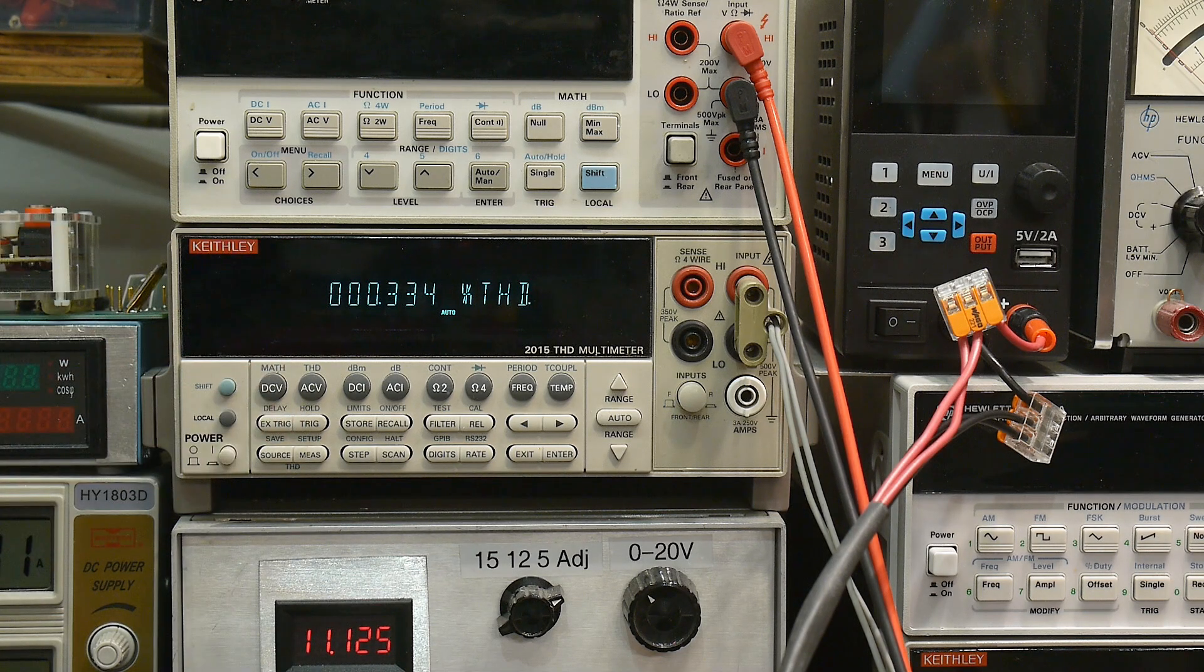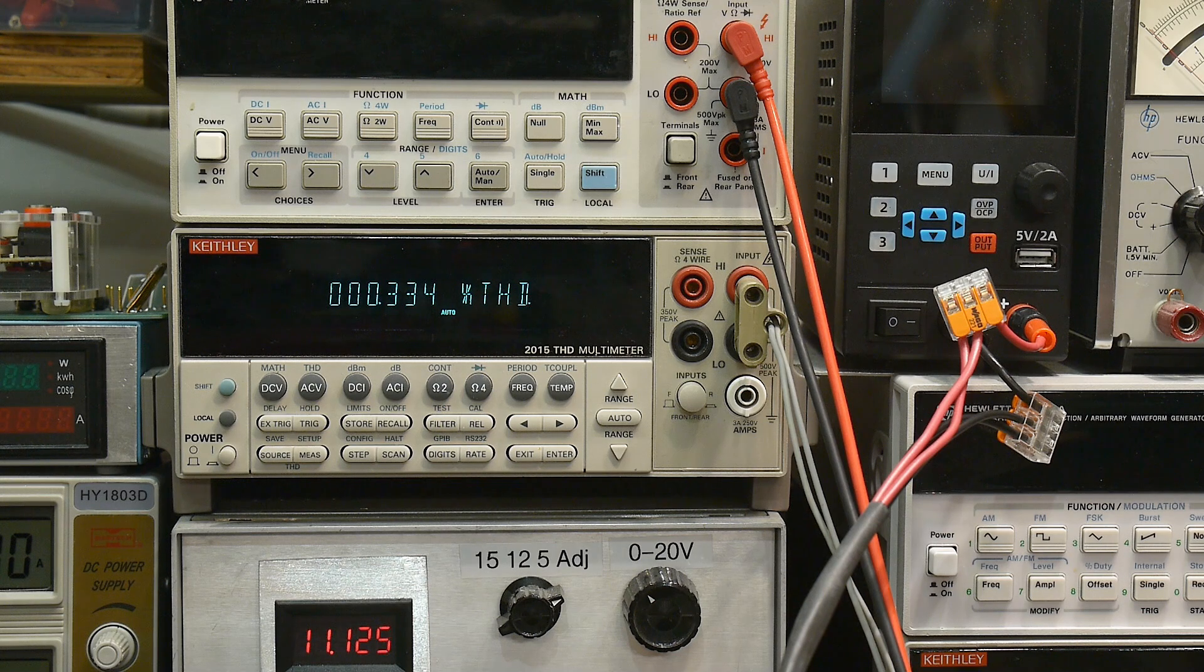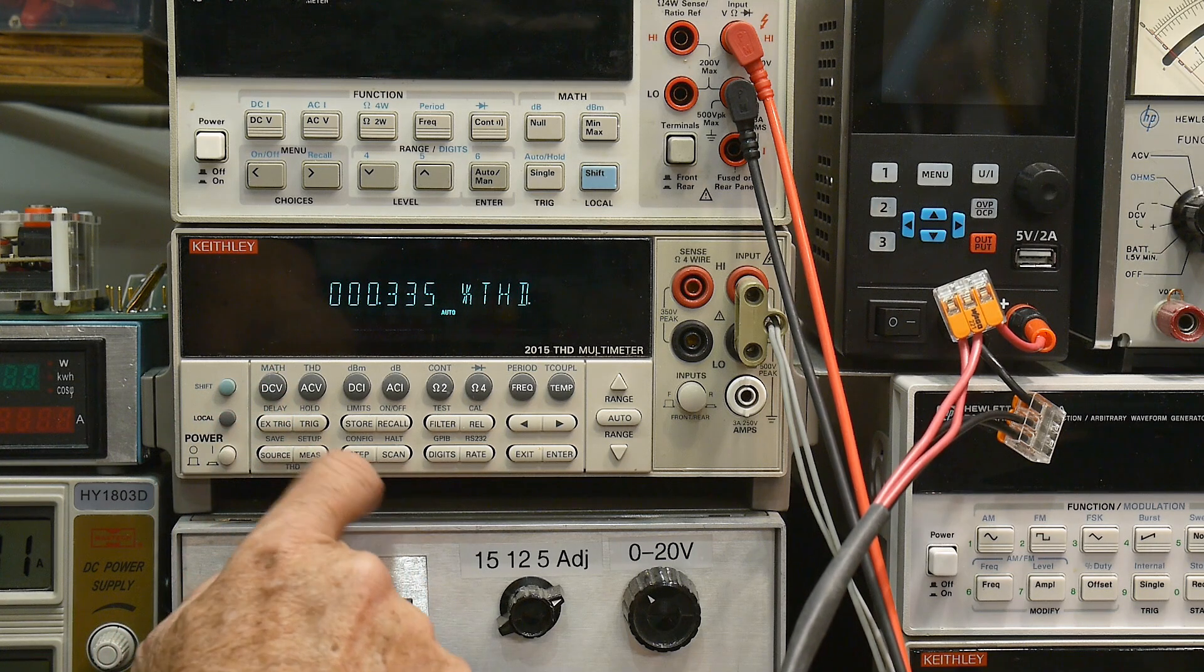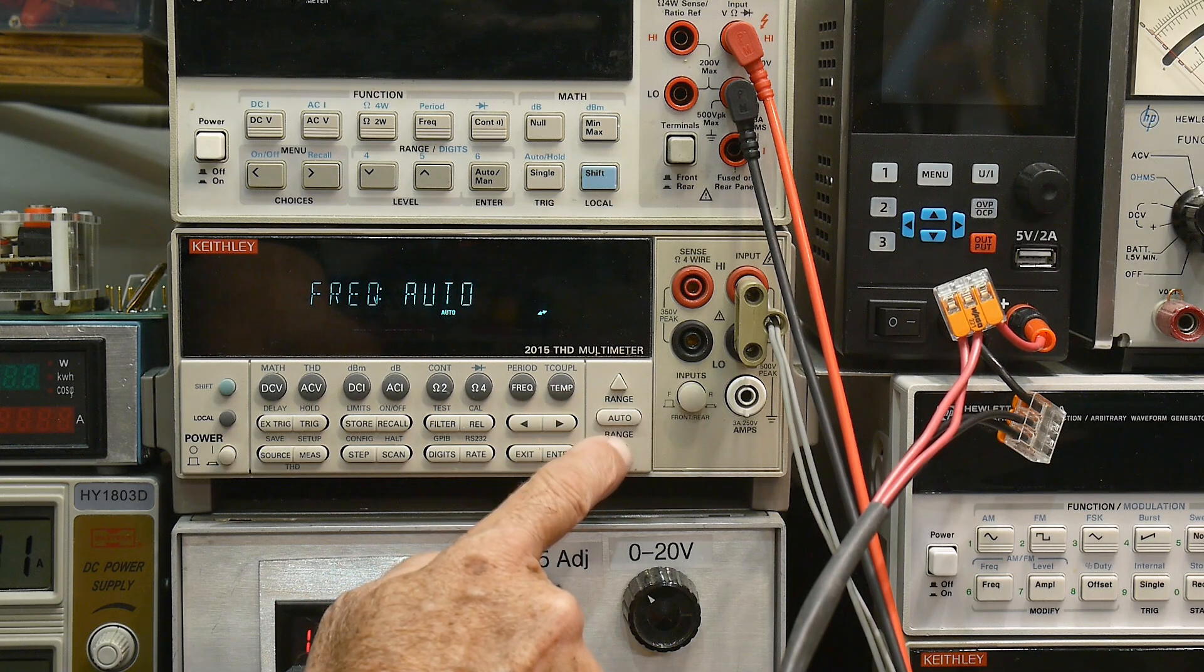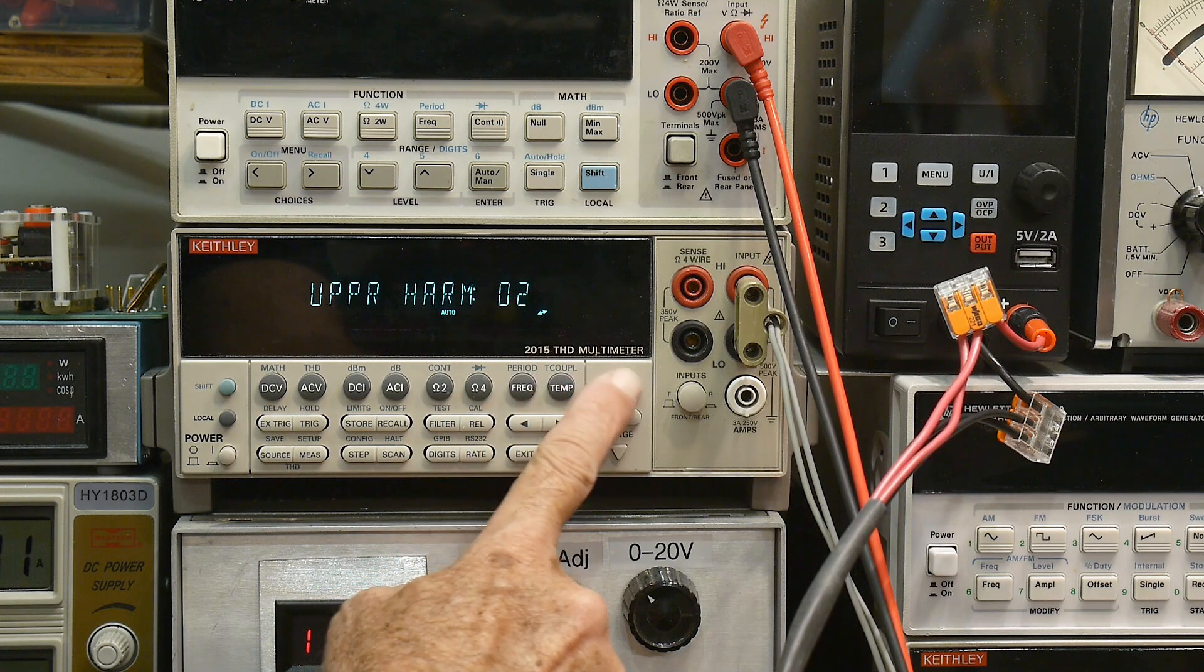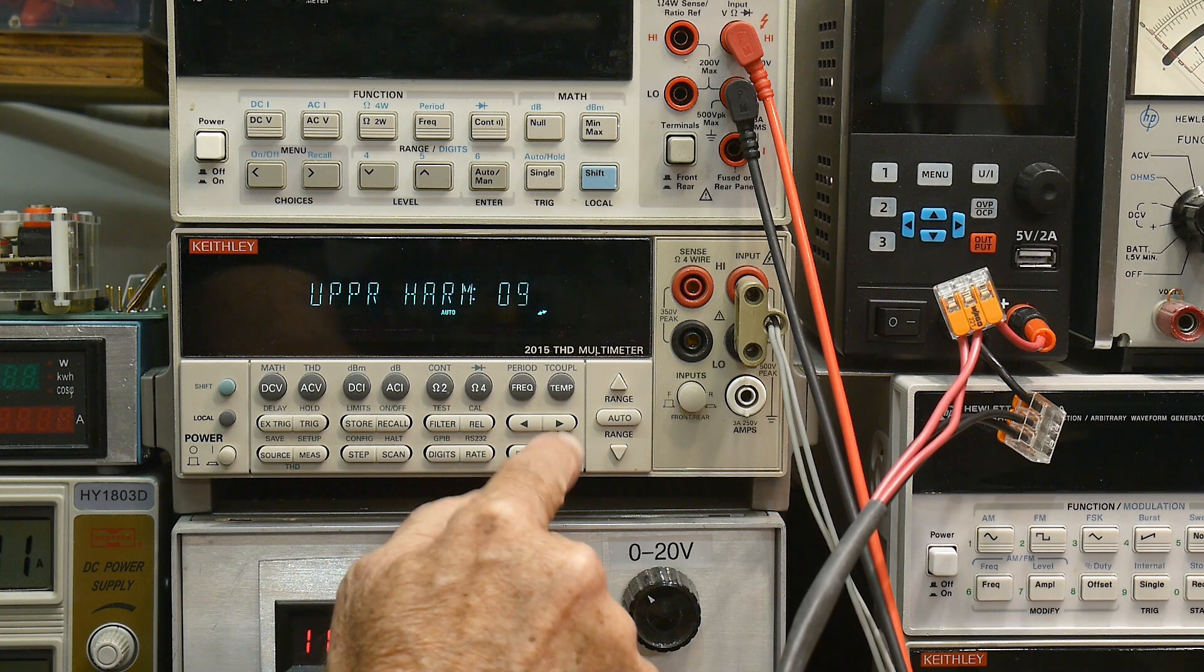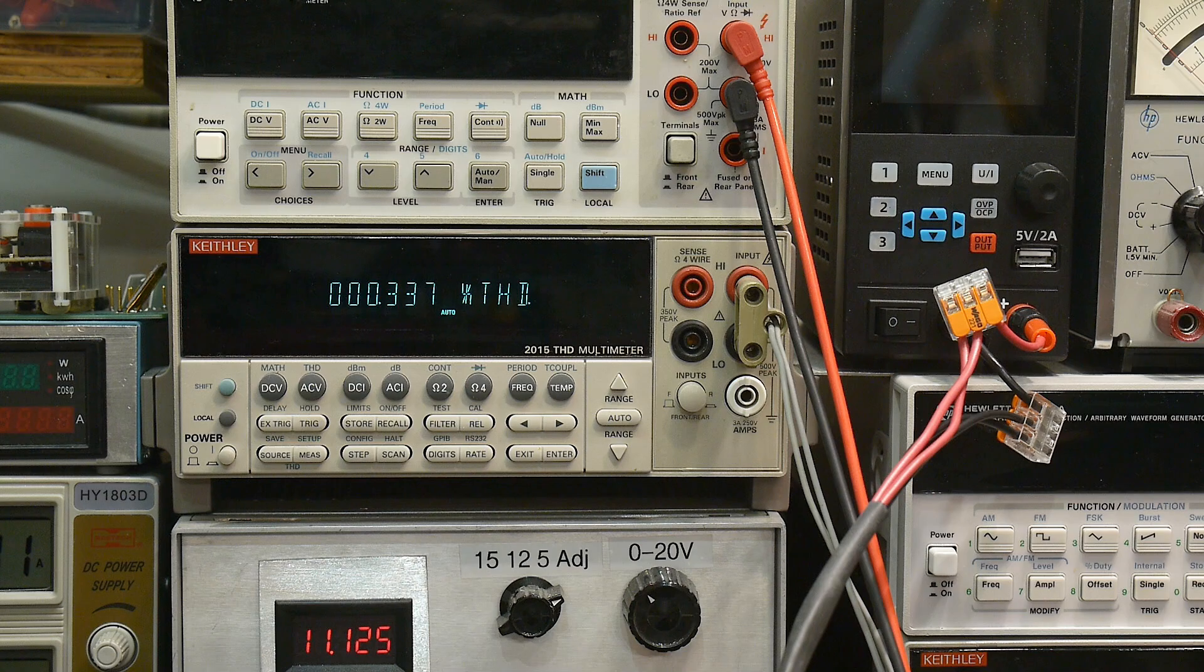Now if you own one of these Keithleys, there's something to be aware of. It can be programmed to count a certain number of harmonics and it defaults to two harmonics. If you go to measurement, total harmonic distortion, frequency automatic, it automatically detects the frequency. And then it says upper harmonics, how many do you want? I have it set to a high number now. It defaults to I think two, and I think we can go up to nine. It'll go up to nine, so let's change it to nine. So 0.3% total harmonic distortion.